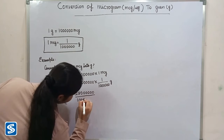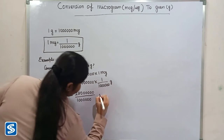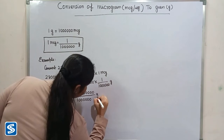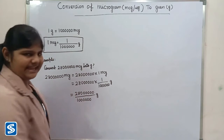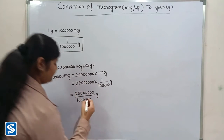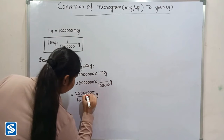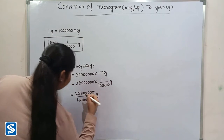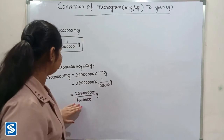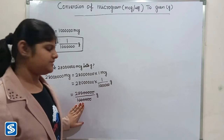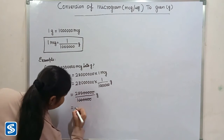So we have 28 million divided by one million grams. Here zero and zero gets cancelled. When we divide 28 million by one million, our answer will be 28 grams.